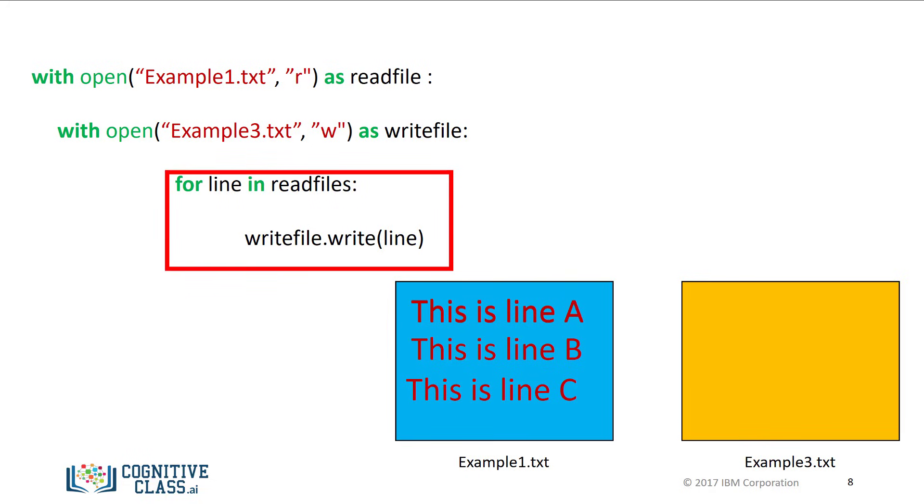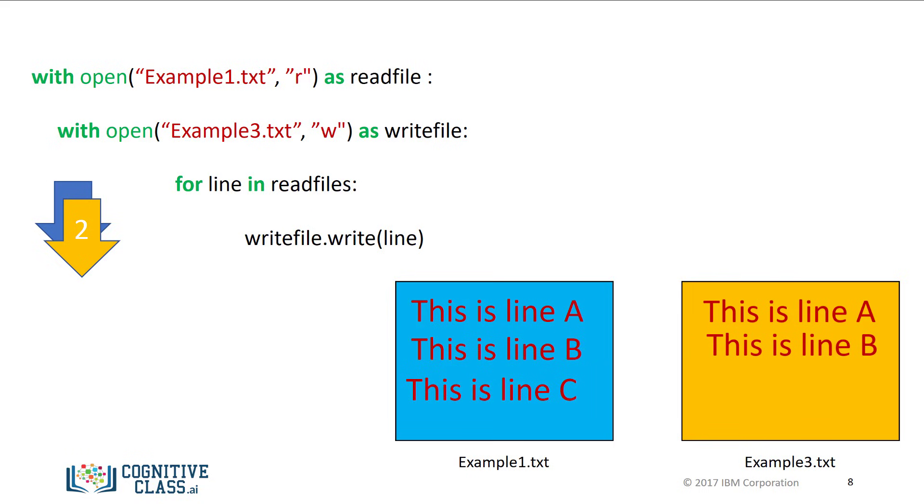The for loop takes a line from the file object readFile and stores it in the file example3 using the file object writeFile. The first iteration copies the first line. The second iteration copies the second line, till the end of the file is reached. Then both files are closed. Check out the labs for more examples.